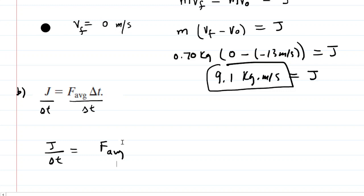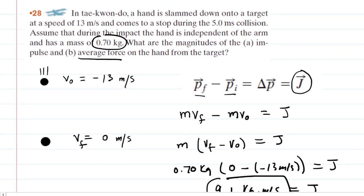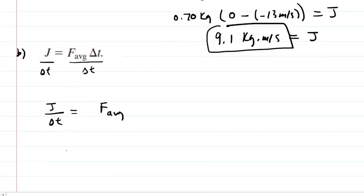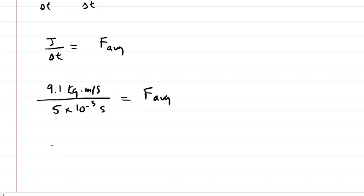The question gave us that time interval. We scroll back up. We can see that it's 5 milliseconds. Be a little careful here. You're going to have to multiply that by 10 to the negative 3 in order to convert that into a standard unit of seconds. So now we'll just put the impulse that we calculated in part A over that time interval. And when we punch that into our calculator, we will get 1,820. This is a force, so that unit will come out to newtons. This is the correct answer to part B of the question.